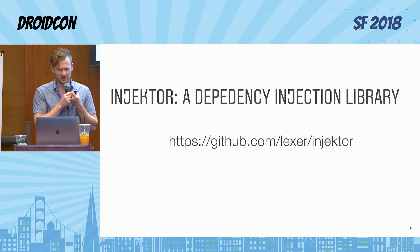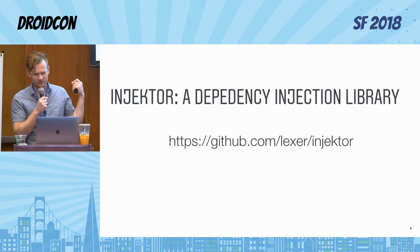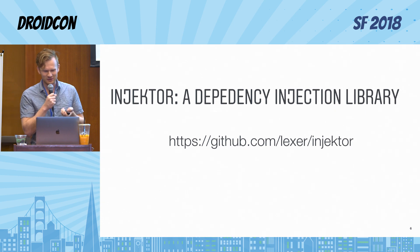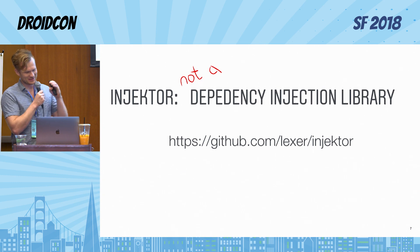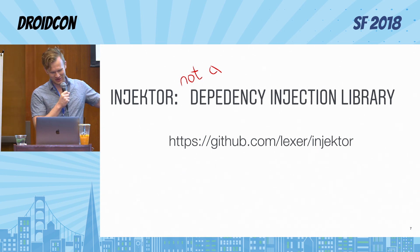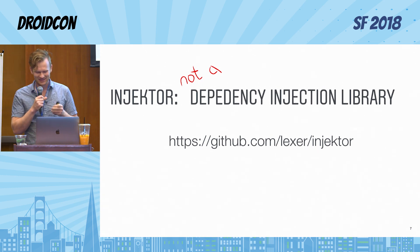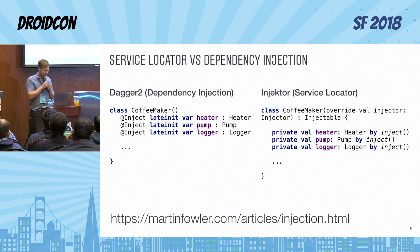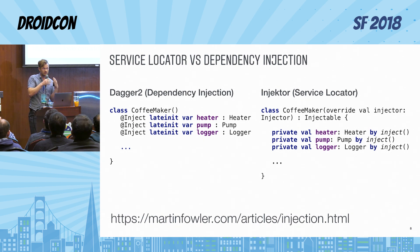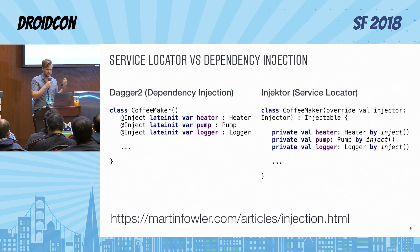Today I want to introduce you to my new dependency injection library that I wrote for Kotlin called Injector. To be completely honest with you, it's actually not a dependency injection library. So what is the controversy about the naming? My injection library actually implements a pattern called service locator.